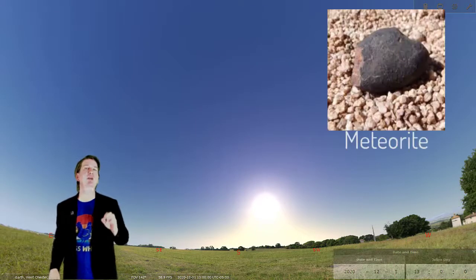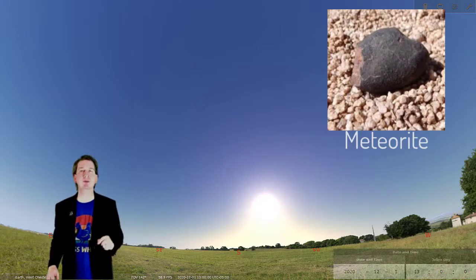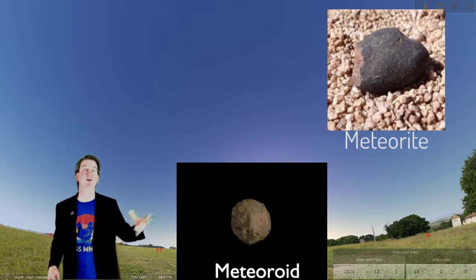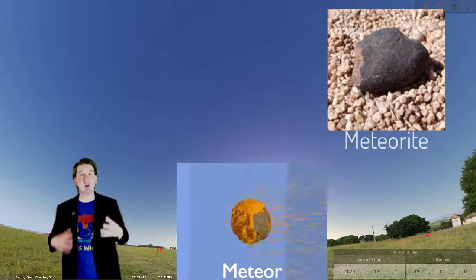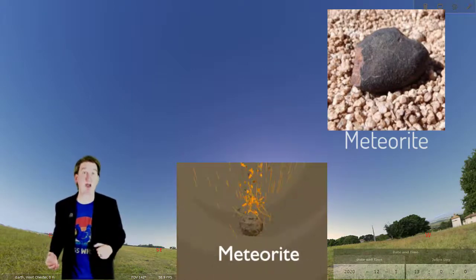Lastly, a meteorite is what can be found if a meteoroid makes it all the way through the Earth's atmosphere without completely burning up from the heat, and makes it to the ground.